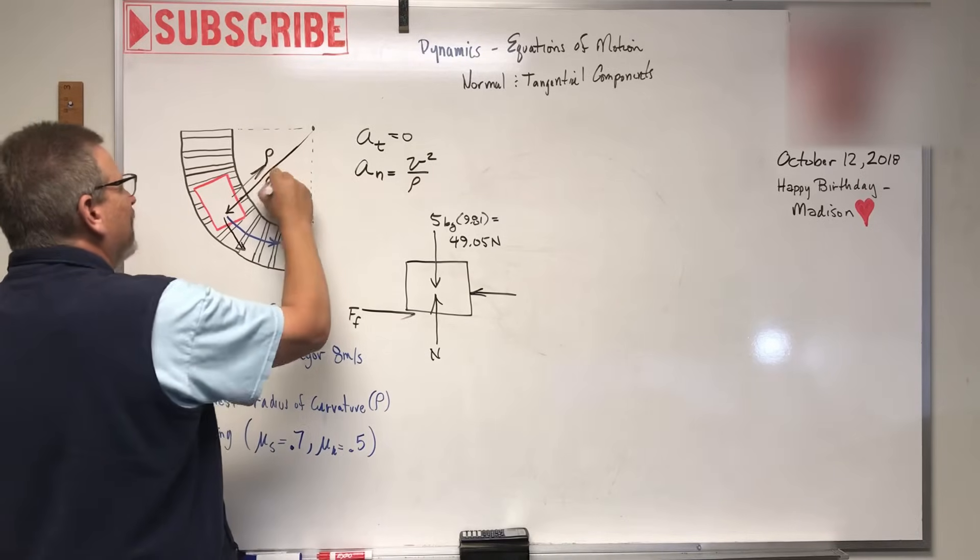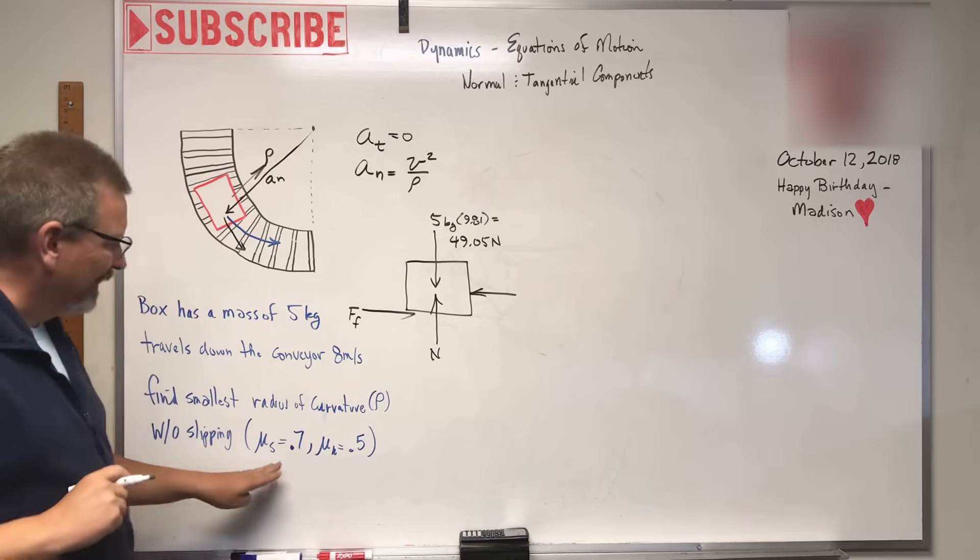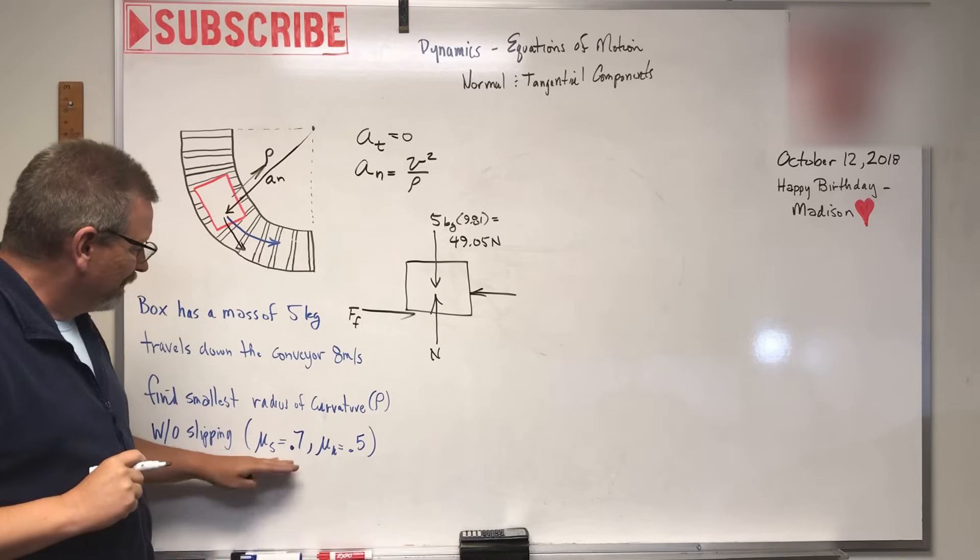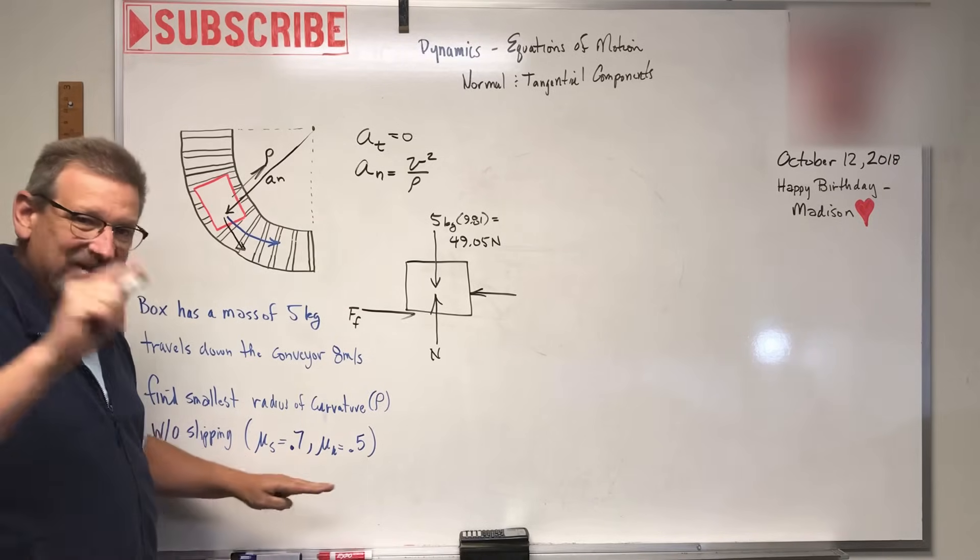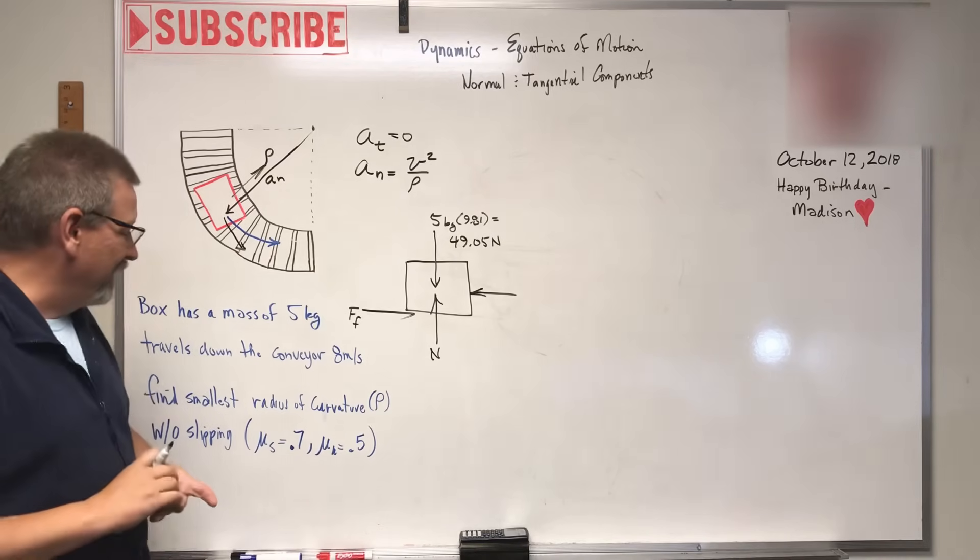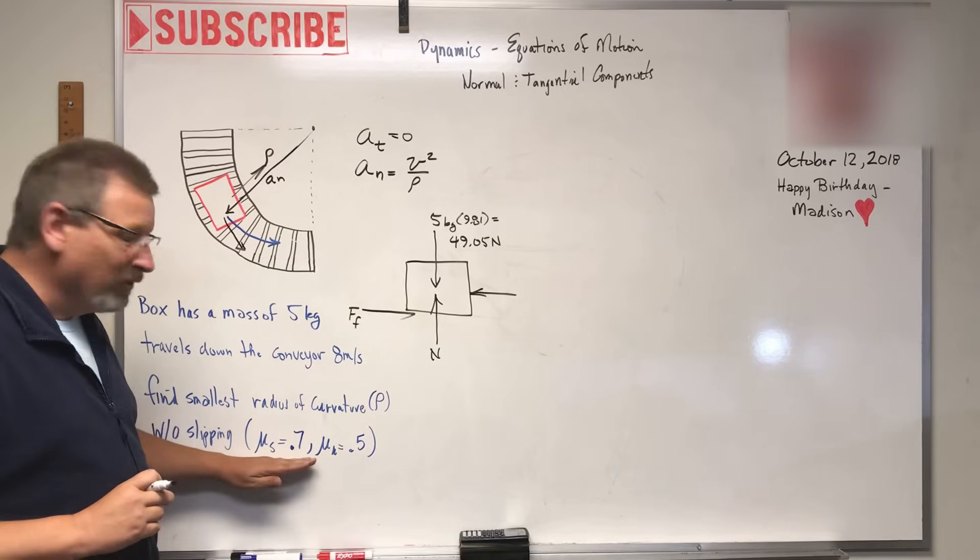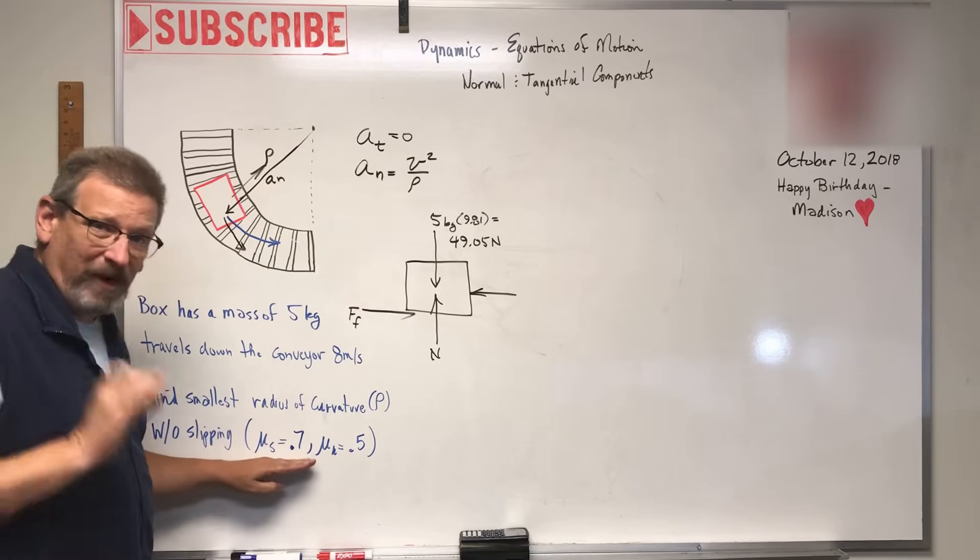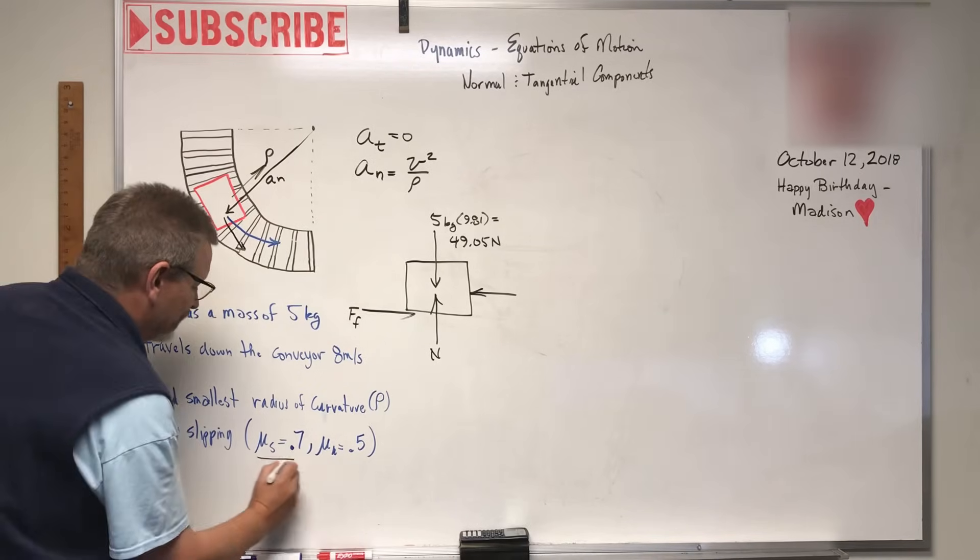It only has a component here towards the center, which is a_normal. Find the smallest radius of curvature without slipping. They give us μ_s and μ_k - that's tricky. The box is moving, so do I use kinetic or static? The box is moving but think about sliding - is it constantly sliding? No. We're going to use the static coefficient of friction because we don't want the box to slide.